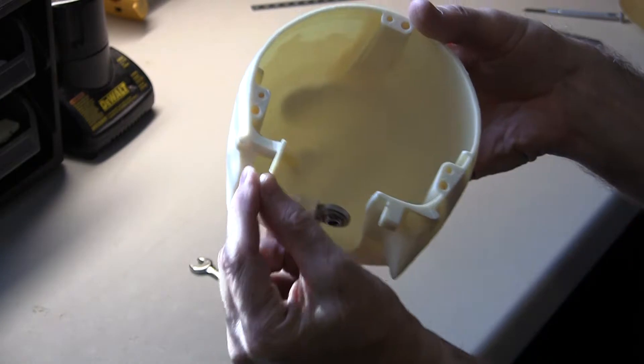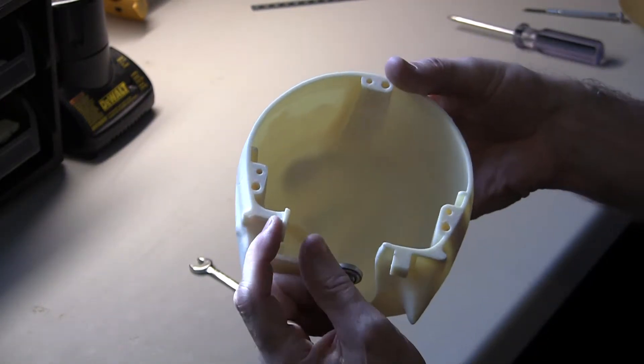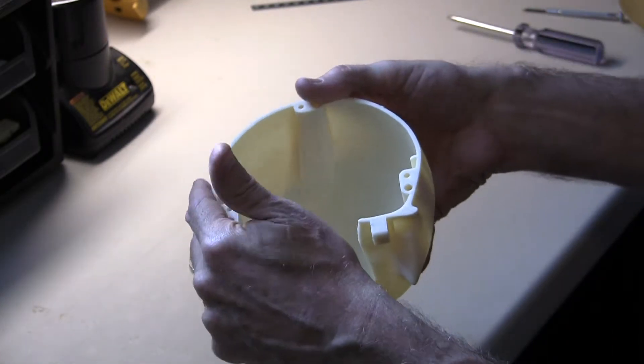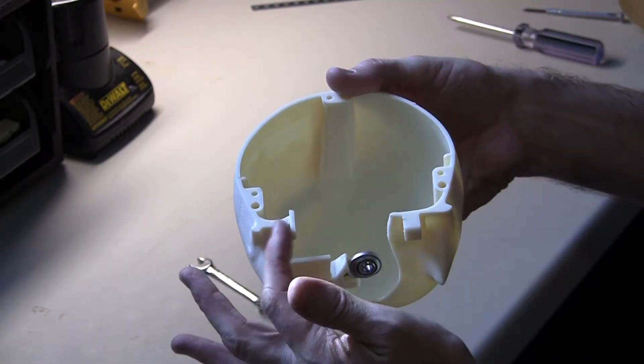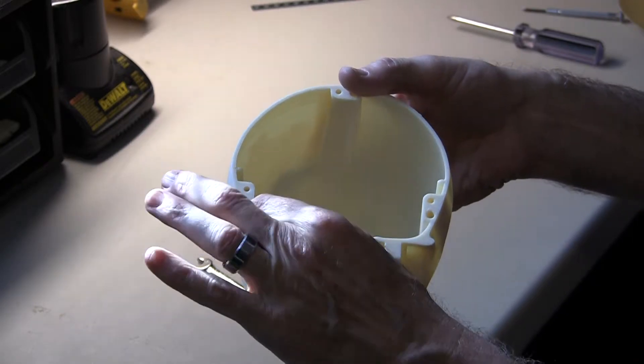You also want to be careful for this very fragile tab here. You don't want to be holding your skull in a way that you accidentally snap that off. That's going to hold in the jaw servo, and that's an important part. So be careful of that.